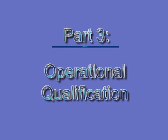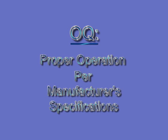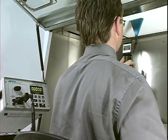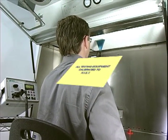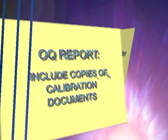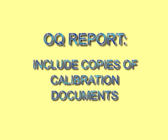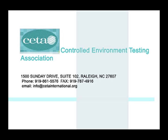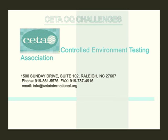The Operational Qualification. Also known as the certification, the OQ establishes and documents the proper operation of the isolator in accordance with the manufacturer's specifications. A document detailing all OQ steps should be completed during this phase. All testing equipment employed during the OQ should be calibrated to an NIST traceable standard within the previous six calendar months. Copies of the calibration document should be included in the OQ test report. This document should meet the acceptance criteria specified in the Isolator Testing Guide of the Controlled Environment Testing Association, or CETA, and will normally specify the following 10 challenges of unit functions as required steps.